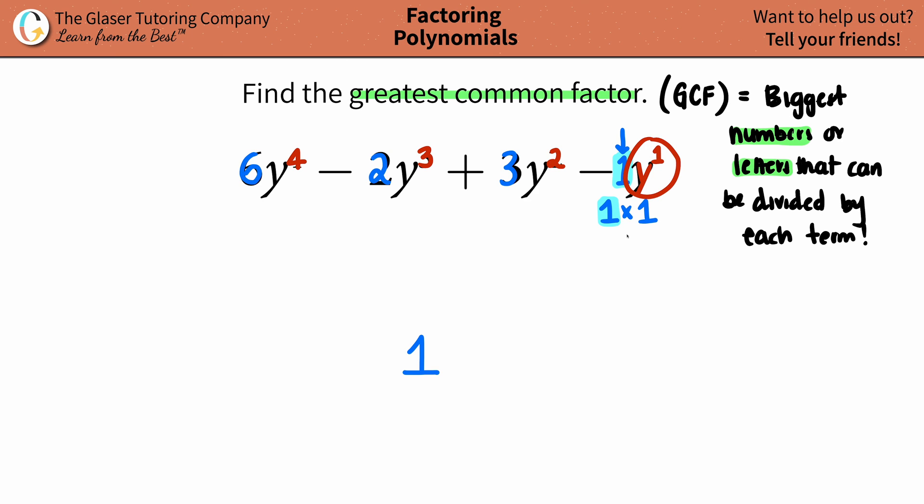Since you only got one y here, that's the only one that's going to be in common between all of these. Each one of these at least have one y. So it would just be y to the 1st. Keep in mind, you don't have to write y to the 1st. You could just say y. And for this one, that would be the greatest common factor. You're only talking about one y value being the greatest common factor for this. And you're done. That's it.